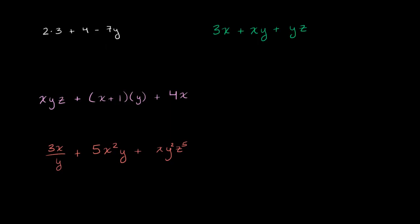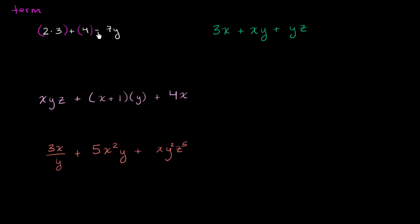We have an expression here. The first thing I want to think about are the terms of an expression, or what a term is. One way to think about it is that the terms of an expression are the things that are getting added and subtracted. So for example, in this expression right over here, you have three things that are getting added and subtracted: you're taking two times three, adding that to four, and then subtracting 7y.